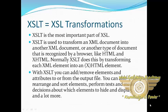XSLT is the most important part of XSL. XSLT is used to transform an XML document into another XML document or another type of document that is recognized by a browser, like HTML and XHTML. Normally, XSL does this by transforming each XML element into an HTML element. With XSLT, you can add or remove elements and attributes to or from the output file. You can also rearrange and sort elements, make decisions about which elements to hide and display, and a lot more.